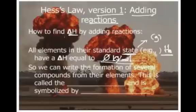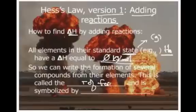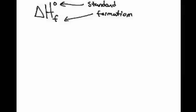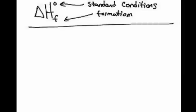So we can write the formation of several compounds from their elements. This is called the heat of formation. Heat of formation is symbolized by delta H with a little F. Does it have a little zero in it? It does have a zero. That means it's at the standard state. Let's formalize this. The little F means formation. And the degree sign, this means under standard conditions. Again, that's 25 Celsius and one atmosphere.